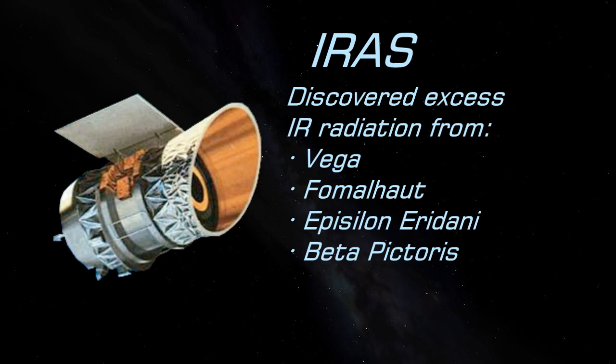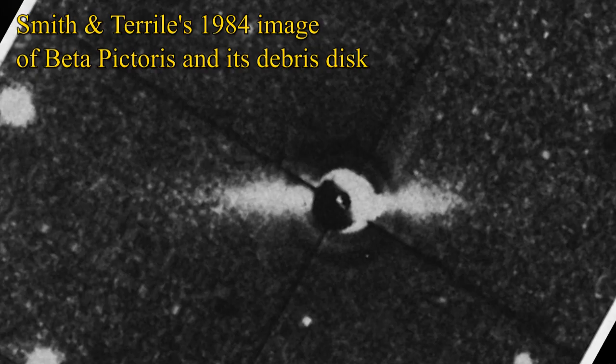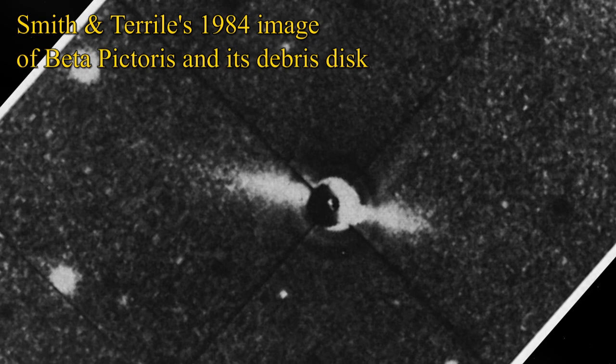Subsequent optical observation of these stars found scattered light from dust around them, showing disc-shaped structures. The first was observed around Beta Pictoris in 1984 by Smith and Turiel.